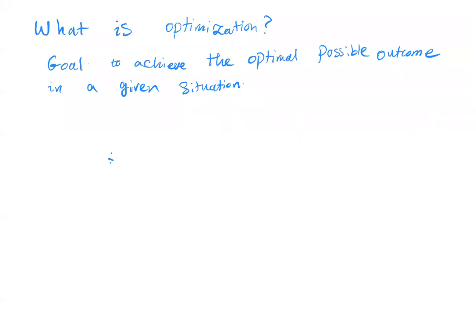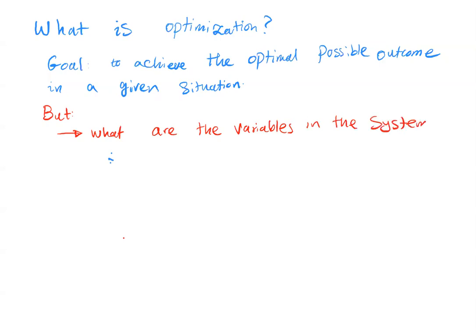We want to ask a few questions to see how we can formulate this problem. The first question is: what are the variables in the system? This means what are our flexibilities — what degrees of freedom do we have when we want to make a decision and optimize our goal?